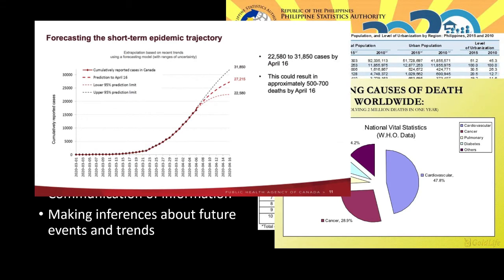We see a lot of this today — professionals managing epidemics are concerned about the future, such as what will happen with the rise in COVID-19 infections. They make projections based on existing conditions and on scenarios where certain actions are or are not taken. Using data collected with valid statistical methods, they make inferences about what might happen, which is one of the most important uses of statistics.